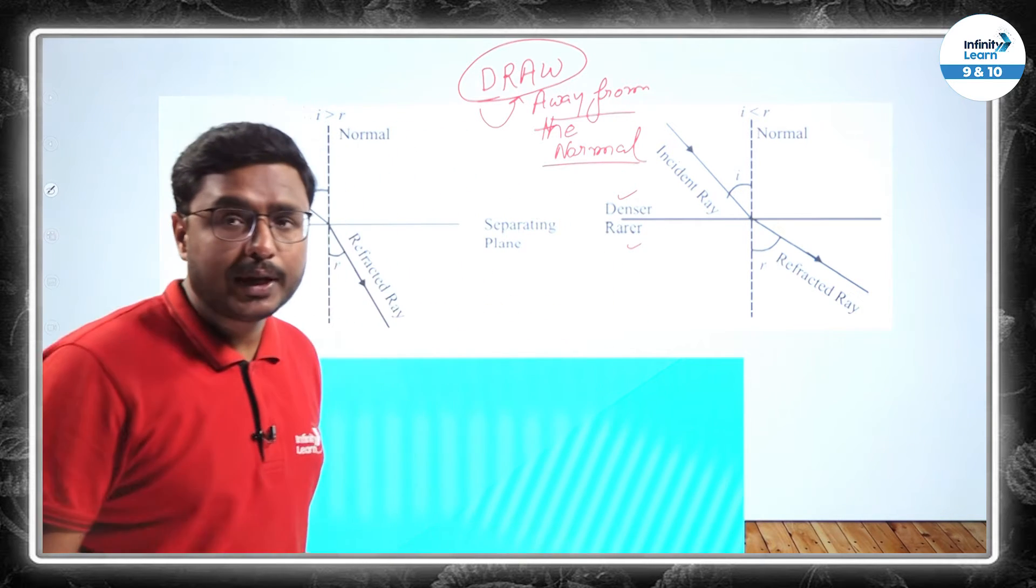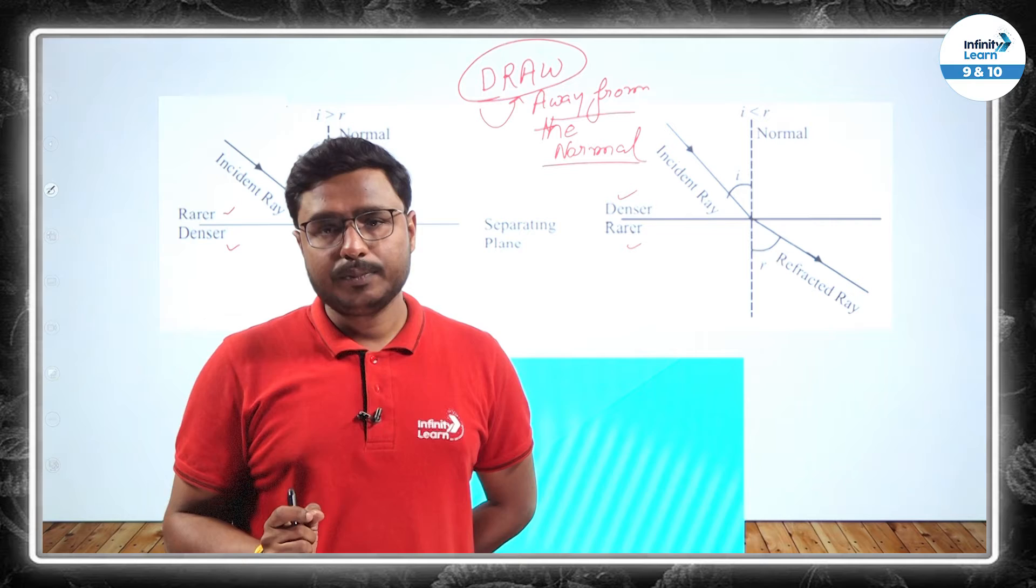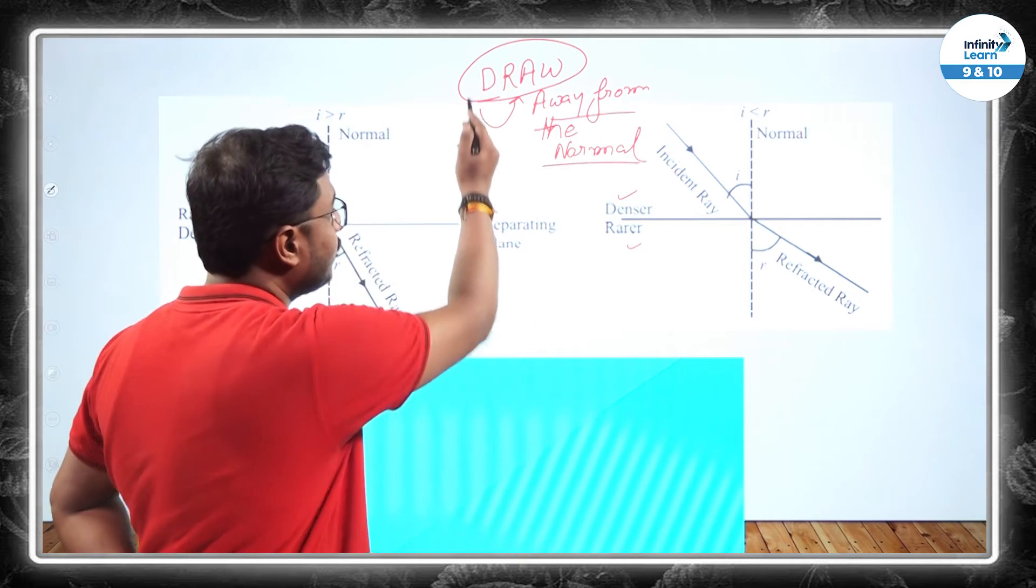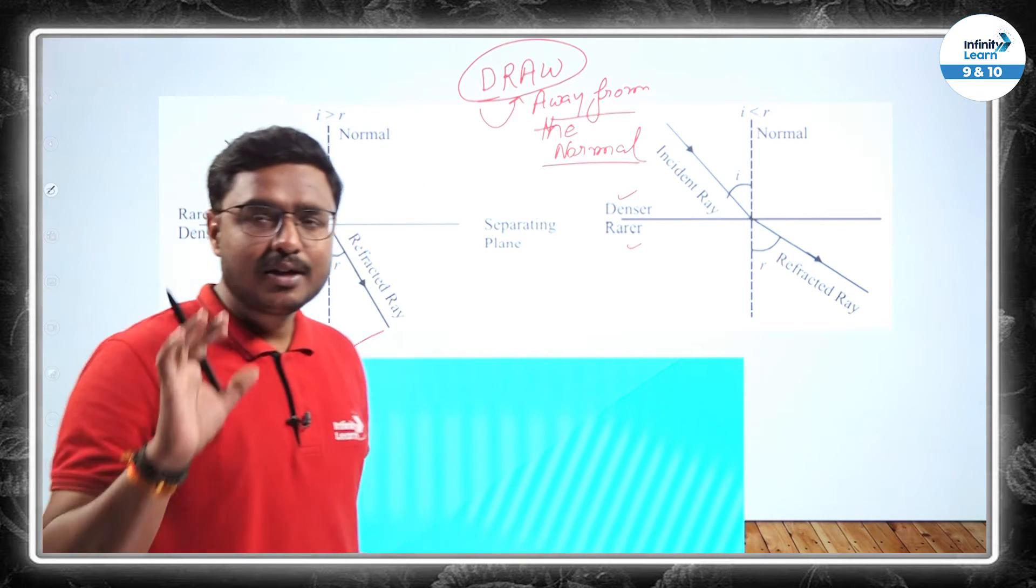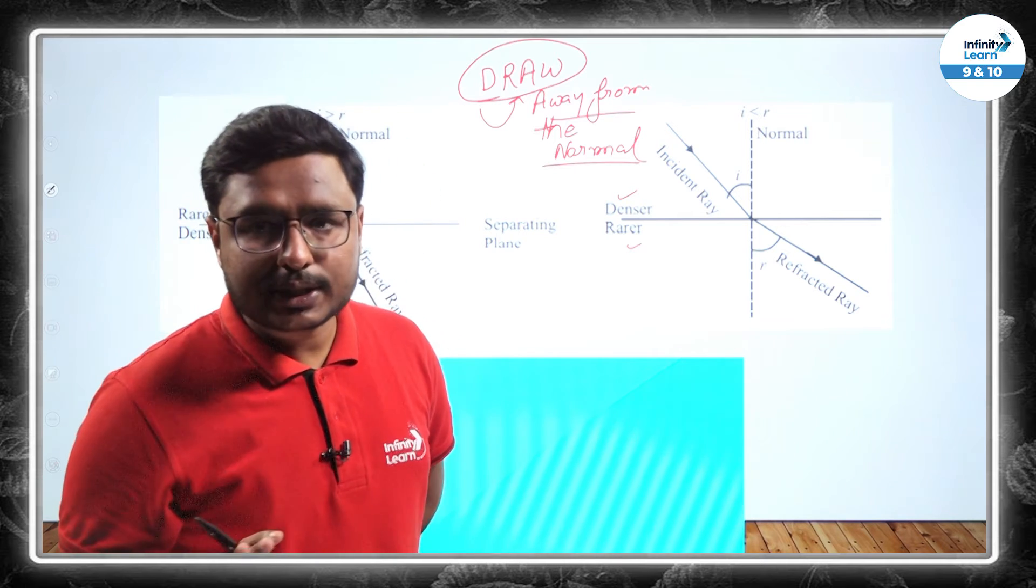So denser to rarer when it is moving, it always moves away from the normal. AW means away from the normal. Denser to rarer, away from the normal. And what is going to happen when it is passing from rarer to denser, towards the normal. Easy, simple, understood this thing.